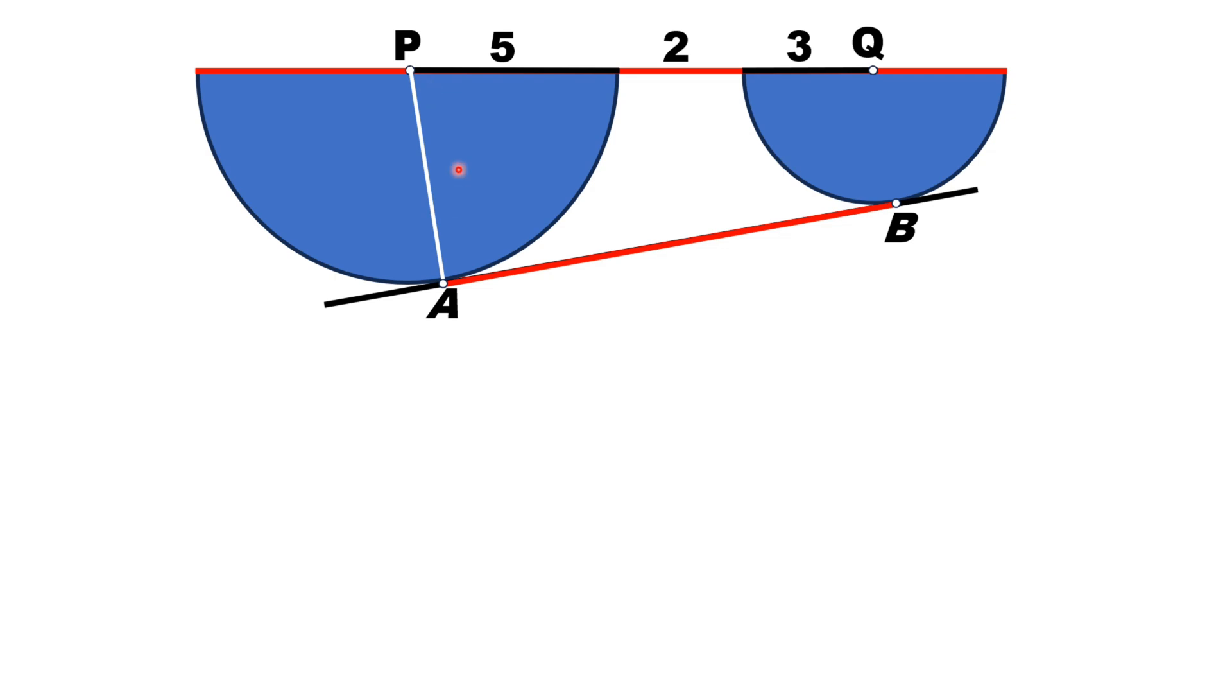We know that radial length of this semicircle is 5 units, so PA is 5 units. In the same manner, we draw a line segment QB. This is again the radius of smaller semicircle.